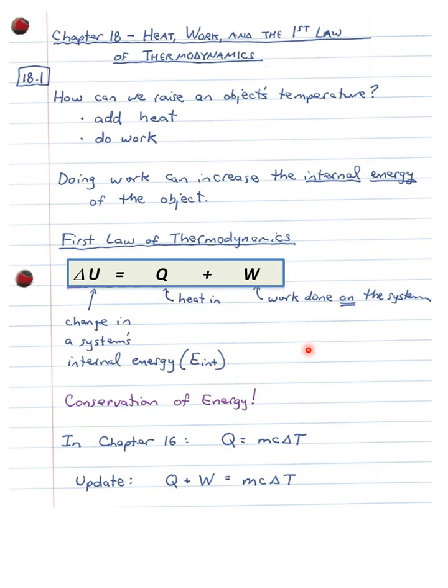Back in chapter 16, you learned that in raising the temperature of an object, Q = MCΔt — the heat we put in is mass times specific heat times change in temperature. Now I'm going to update that equation. Yes, Q = MCΔt, but we can also do work. So now Q + W = MCΔt, because the work done can also add to a change in temperature. For example, you have a canister of gas on the stove — that's adding heat — but you also compress it, doing work on it, which will add to an increased temperature.